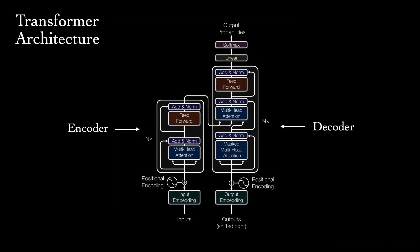The architecture of the transformer can be a little intimidating when you first see it. This is the figure from the original paper, and it looks like there's quite a bit going on. But many of these blocks are things you may already be familiar with, like feedforward networks. The key novel components are the positional encoding and multi-head attention blocks, which we'll look at shortly.